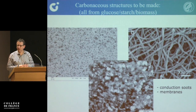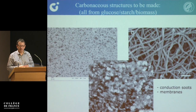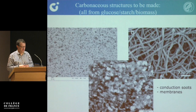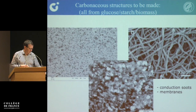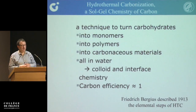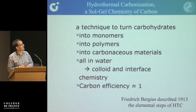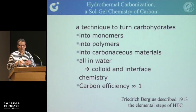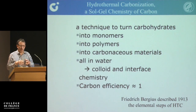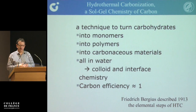All these structures you know very well because they could have been made from silica. So what did we do? We just applied all the rules we know from silica and applied them for carbons. The monomer in this case is ordinary sugar — glucose, starch, or cellulose. Hydrothermal polymerization, very similar to silica, first turns the monomer into a reactive monomer — in this case not by hydrolysis but by dehydration.